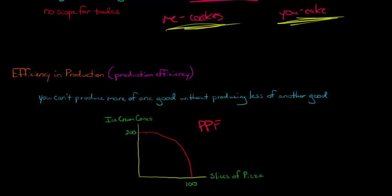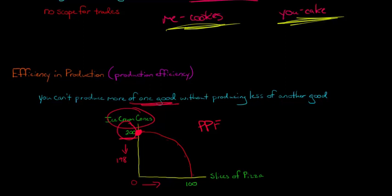Let's focus on one point. Let's say we're producing 200 ice cream cones and zero slices of pizza. If we wanted to produce one additional slice of pizza — go from zero to one — we're going to have to decrease the amount of ice cream cones. We cannot produce any more than zero slices of pizza without going from 200 to, say, 198 ice cream cones. All the points along the curve are efficient in production because at all those points, you couldn't get any more of one good without decreasing the amount of the other good.